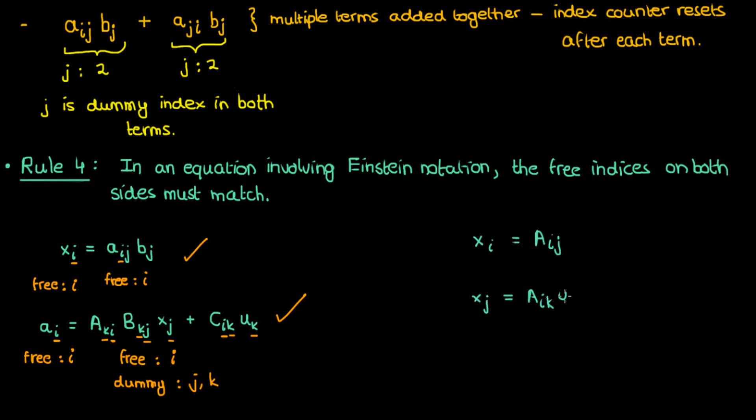However, if we had these equations, then in both cases there's an inconsistency between the free indices on either side of the equality. In the first equation, i is the only free index on the left, but i and j are free indices on the right, so this first equation is written incorrectly. It's meaningless in Einstein notation. In the second equation, j is the only free index on the left, but i is the only free index on the right. Again, there's a mismatch, and this equation is wrong. Finally, in this third equation, i is the only free index on the left, but i and j are free indices on the right, which again makes this equation wrong.